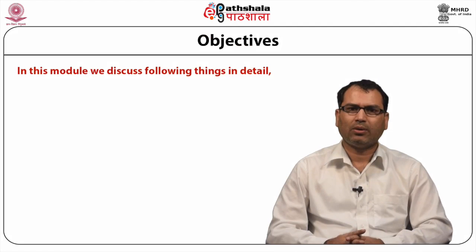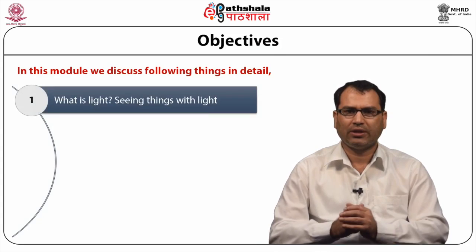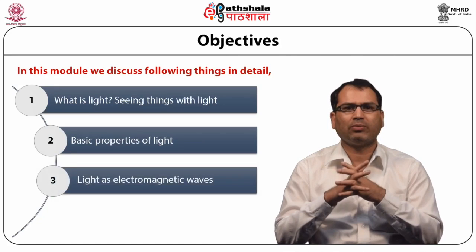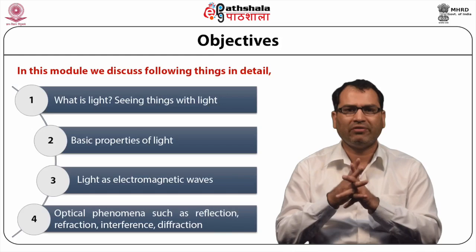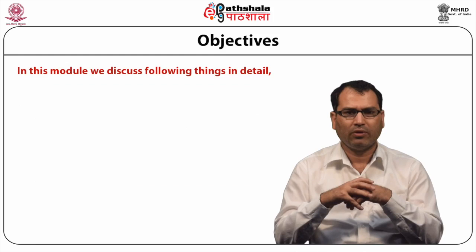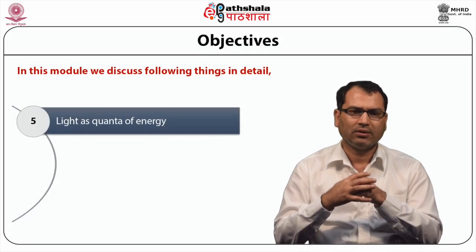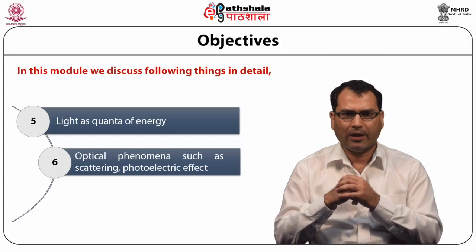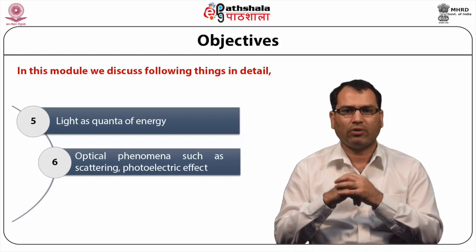In this module we will learn about the following things: what is light, why do you see things, how light is helpful in seeing things, basic properties of light, light as electromagnetic waves, and optical phenomena where the wave nature of light is used to explain phenomena like reflection, diffraction, and interference. We also discuss the quantum nature of light and optical phenomena like scattering and photoelectric effect.